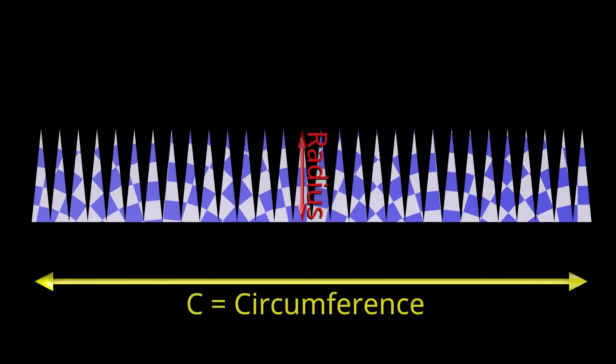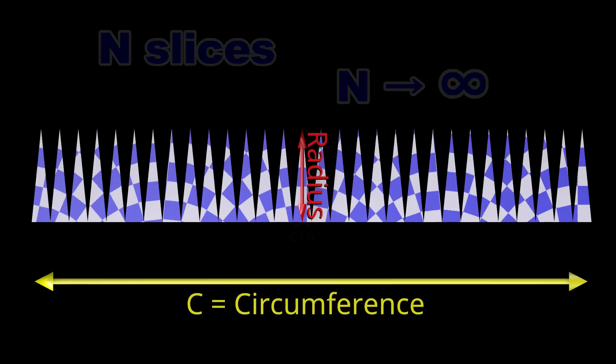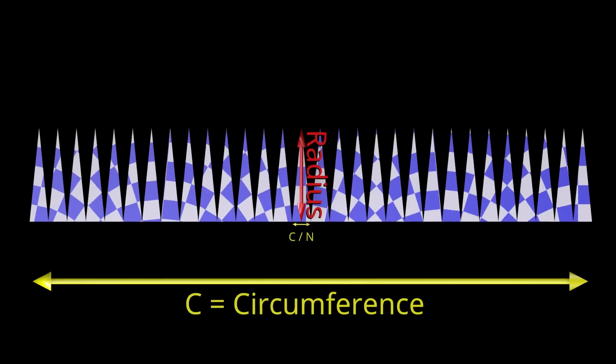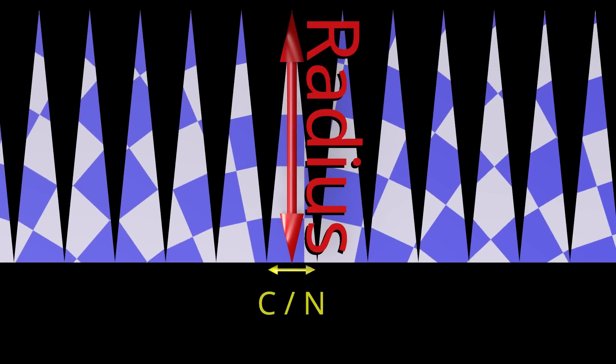We can unroll a circle into N slices, with N approaching infinity, and each slice approaching a perfect triangle. The total length at the bottom is equal to the circle's circumference. The length of the base of each triangle is equal to the circumference divided by the number of triangles. The height of each triangle is equal to the radius of the circle.